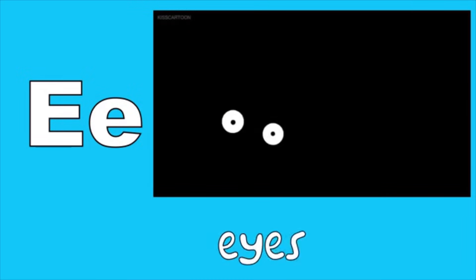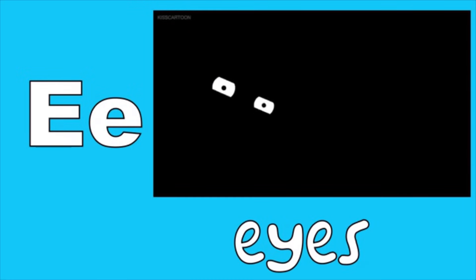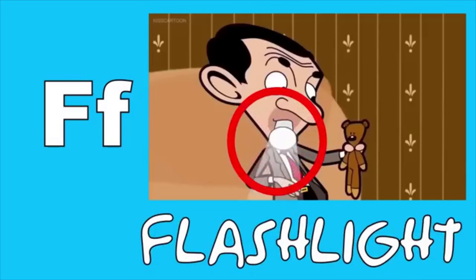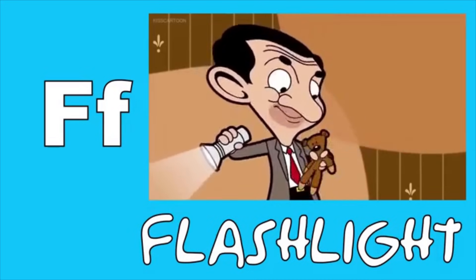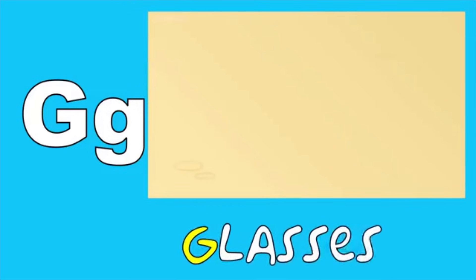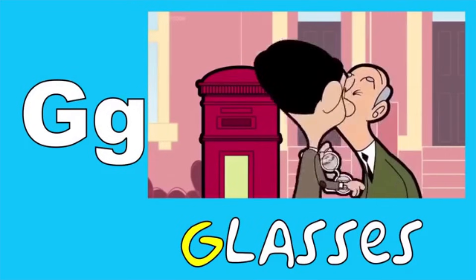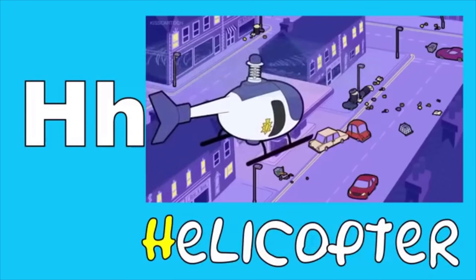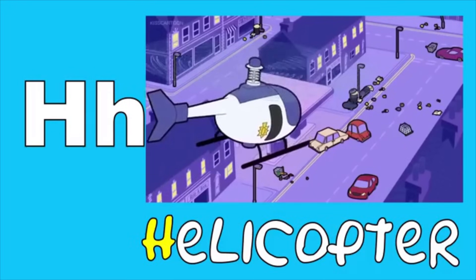E is for ice, eh, eh, ice. F is for flashlight, f, f, flashlight. G is for glasses, g, g, glasses. H is for helicopter, h, h, helicopter.